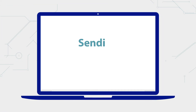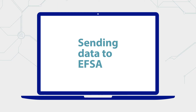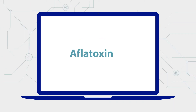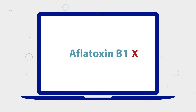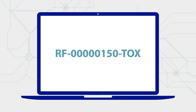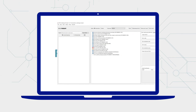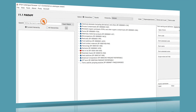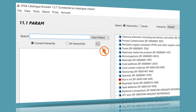When you're sending data to EFSA, you need to use the correct codes. For example, if you identify Aflatoxin B1 as the contaminant, you cannot use the term Aflatoxin B1. Rather, you have to use its corresponding code. You can find the correct code in the catalogue.